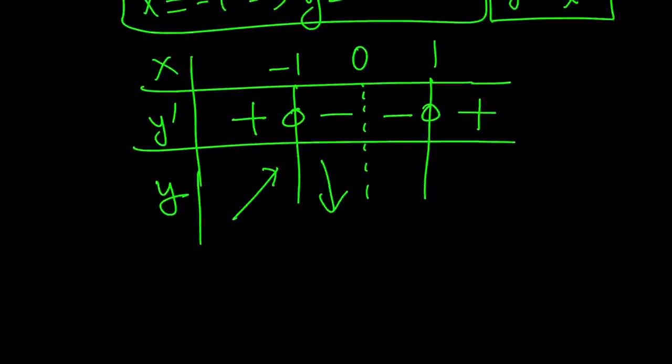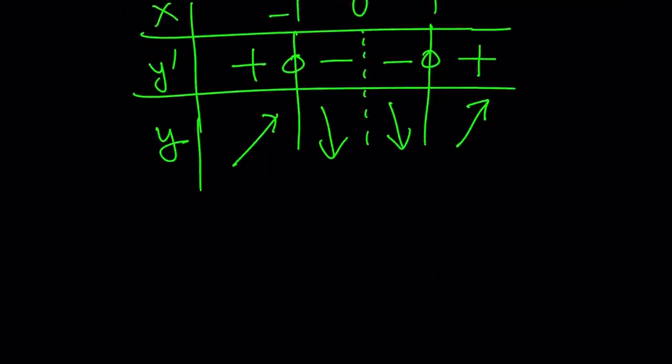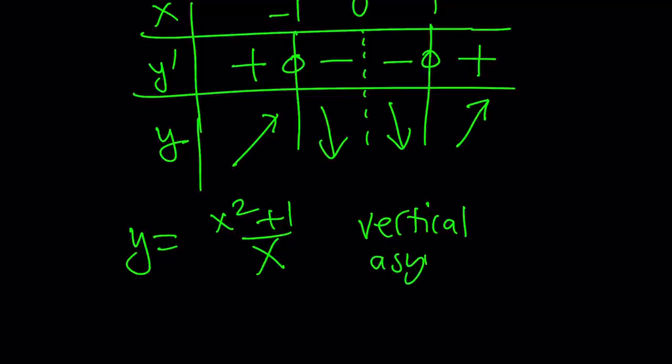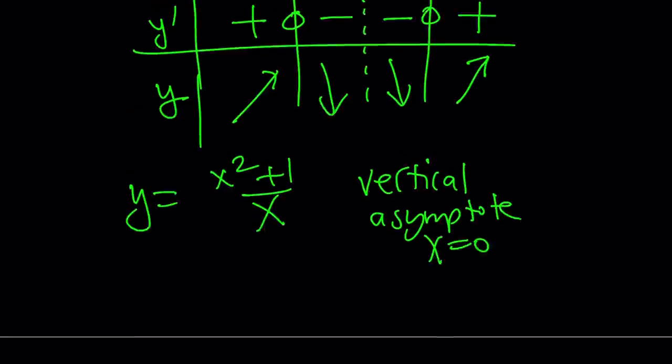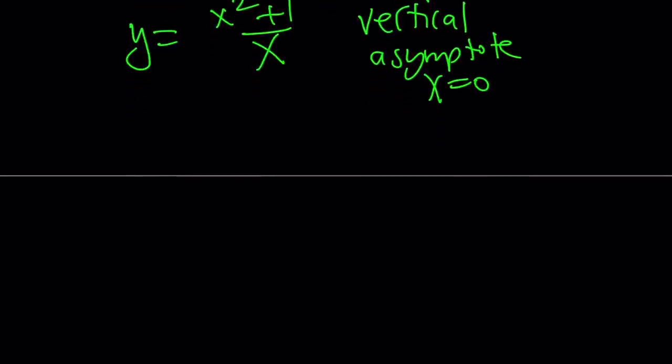Right? And here, it's going to stay as negative because 0 is not a root. And then, it is going to be positive again. So, this means that our graph is going to increase and then decrease. And then, it's going to decrease and then increase. But notice that there's going to be a gap. And actually, what we have at 0, let me rewrite our function, the original one. So, we have actually a vertical asymptote.